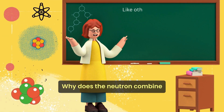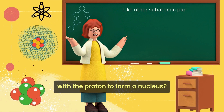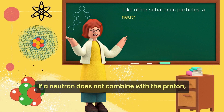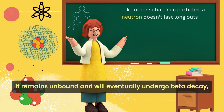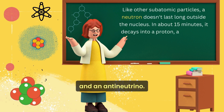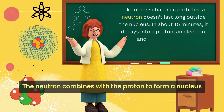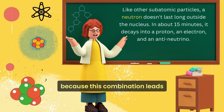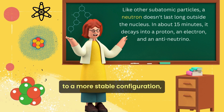Why does the neutron combine with the proton to form a nucleus? If a neutron does not combine with a proton, it remains unbound and will eventually undergo beta decay, transforming into a proton, an electron, and an antineutrino. The neutron combines with the proton to form a nucleus because this combination leads to a more stable configuration, thereby preventing its decay.